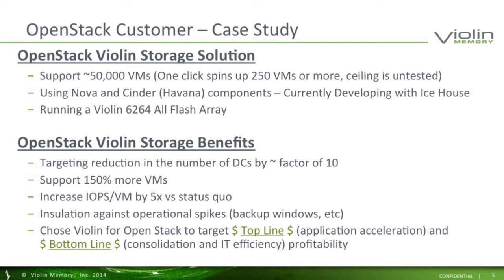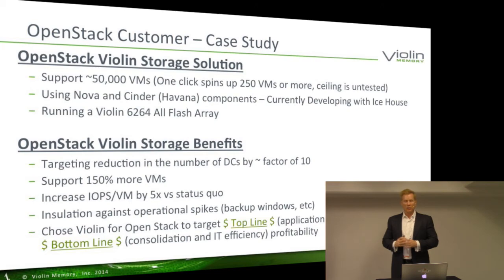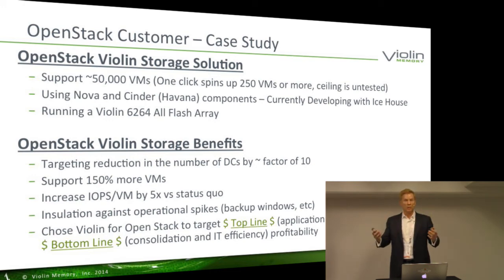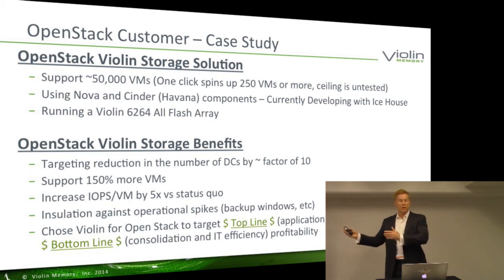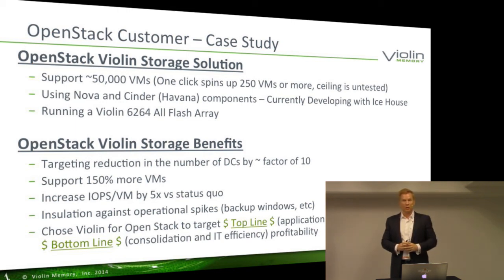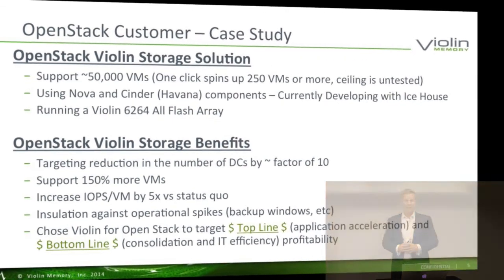The benefits this customer has been expecting and receiving from this rollout include reducing the number of data centers by a factor of 10. By using OpenStack and a more efficient infrastructure layer, they're consolidating data centers and benefiting from the resulting CapEx and OpEx savings, which can then be reinvested into technologies for continued scalability and performance. They're also looking to support year-over-year 150% growth in virtual machines, making scalability absolutely key as demands on the infrastructure continue to grow every year.